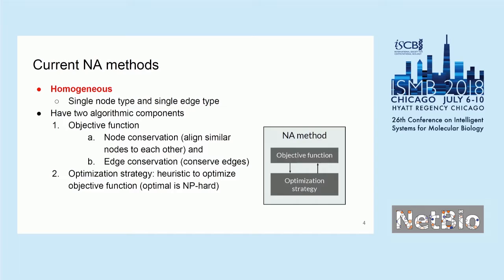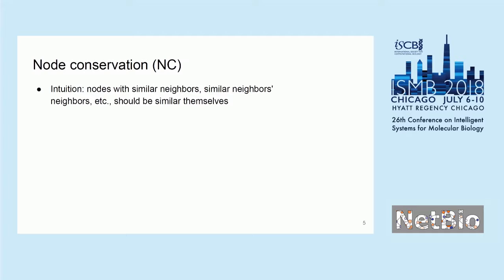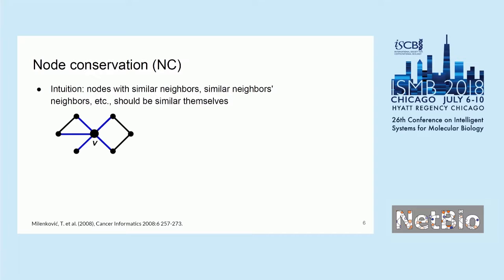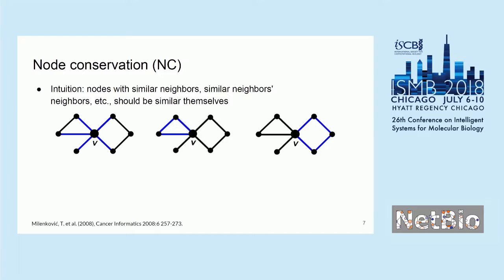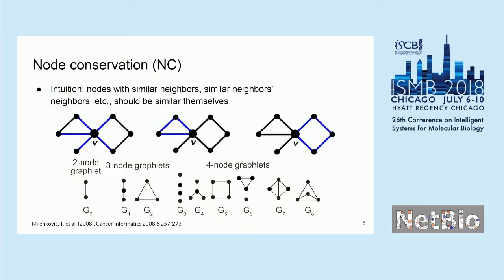For node conservation, under the assumption that we want to align similar nodes to each other, our intuition is that nodes with similar neighbors, and similar neighbors' neighbors, and so on, should be similar themselves. We can capture this by counting small substructures. For node V, we can count how many two-node paths it's part of, how many triangles, how many squares. We can do this for all subgraphs up to K nodes — these subgraphs are called graphlets. In this study, we consider up to four-node graphlets.